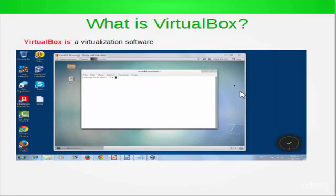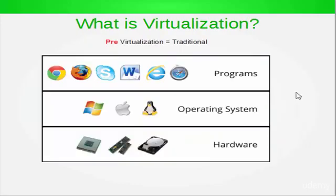Before talking about virtualization, let's take a look at pre-virtualization. As you can see in this picture, this is the normal case and the normal layers of a computer without the virtualization layer. You can see the layers of the computer. The first layer is the hardware layer, which contains the RAM, the hard disk, and the processor. The second layer contains the operating system you are running — for example, Linux, Mac, or Windows. The third layer contains the software and applications that you download and install on your operating system.